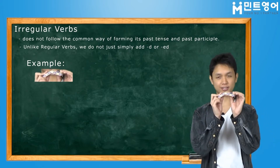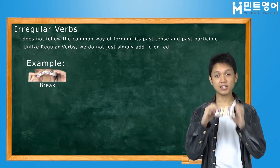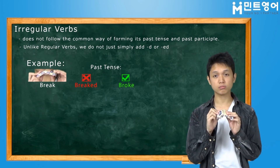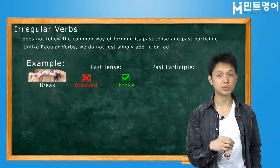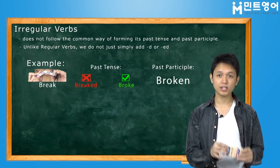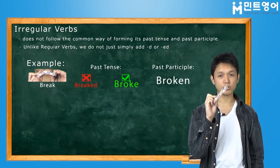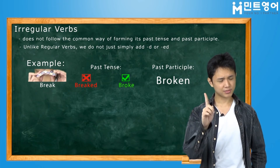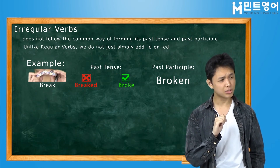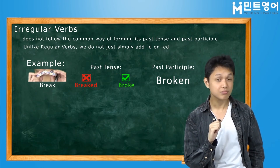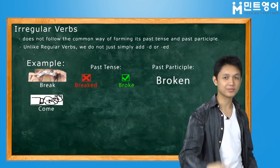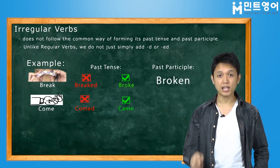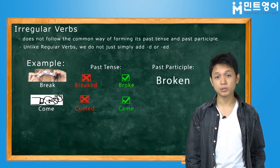The first one is "break." As you can see, its past tense is not "breaked" but "broke," and its past participle is "broken." So remember: break, broke, broken. Next, let me give you another one. The next word is "come," as in "come over." Its past tense is not "comed" but "came," and its past participle is "come."